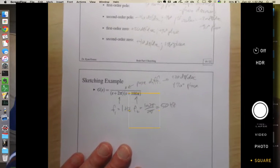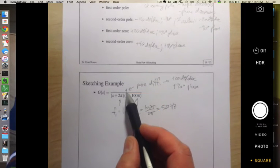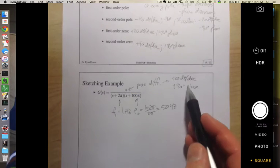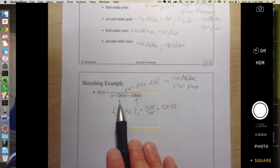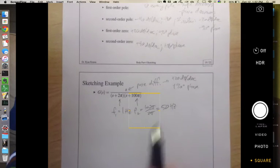So let's take this example. It does have a pure differentiator, so we're going to start off with plus 20 dB per decade and plus 90 degrees phase. Then we've got poles at 2π and 100π radians per second, or 1 hertz and 50 hertz.